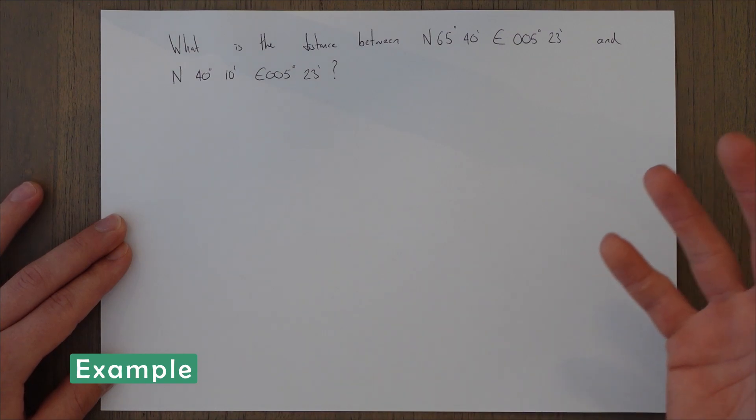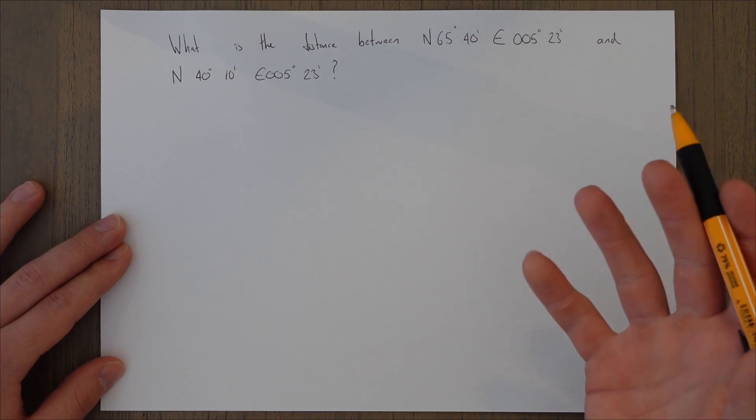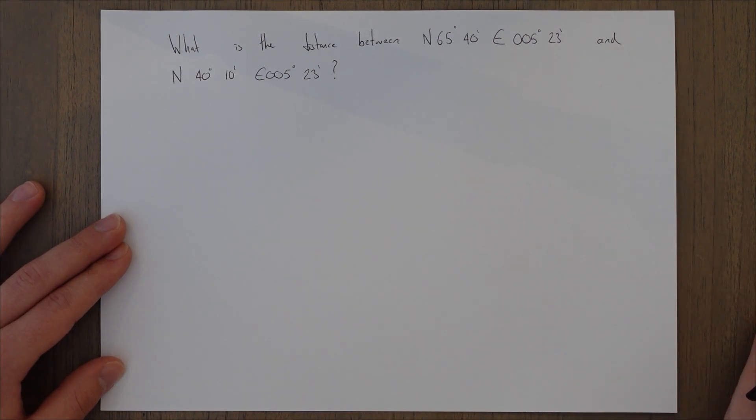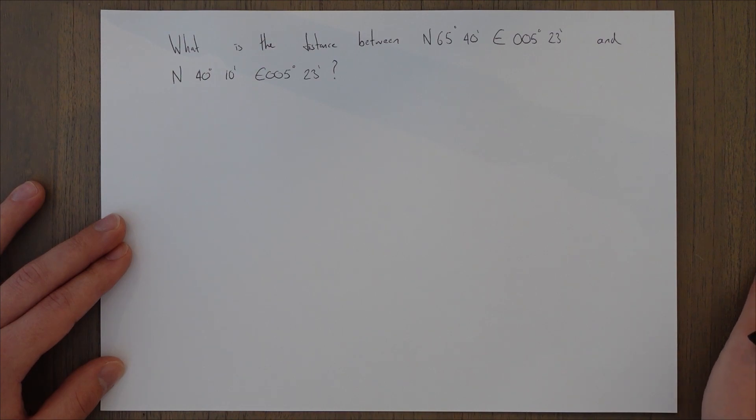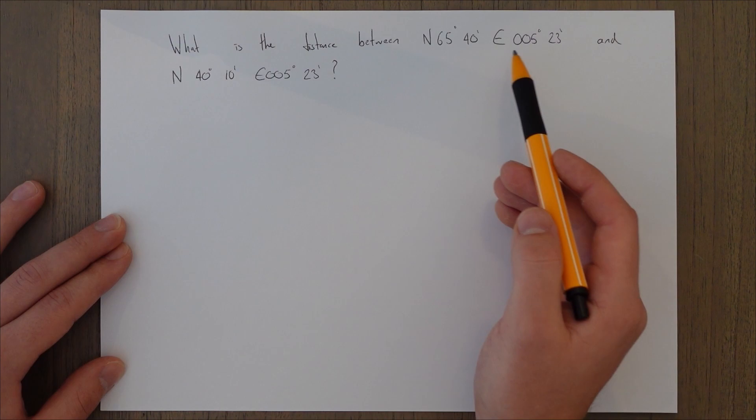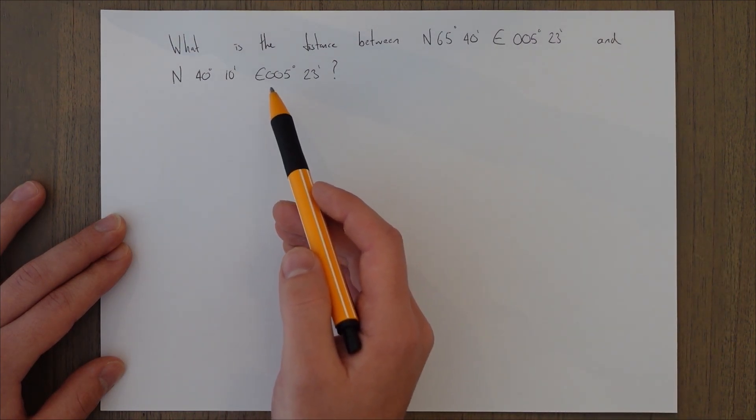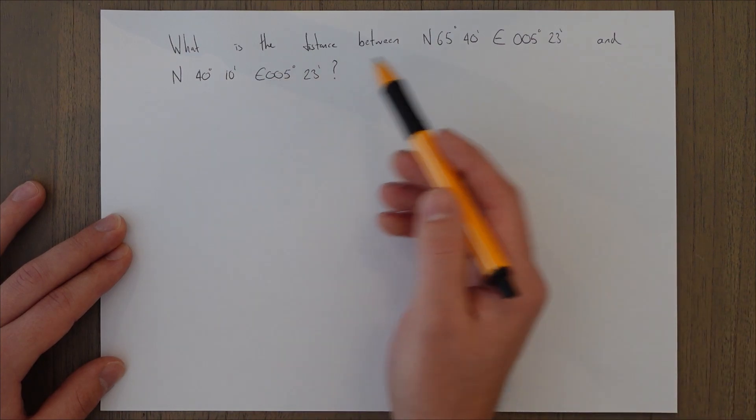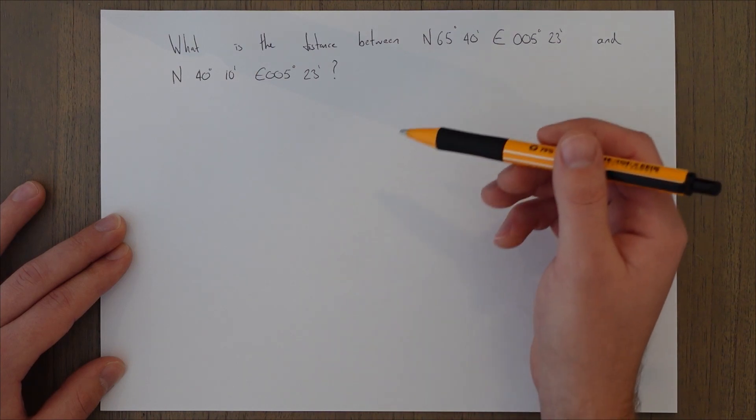So now we know that that distance is derived from the change in latitude, we can do some simple calculations to find out the distance between two points. As long as they're on the same longitude line for now. So I've got this example here. What is the distance between north 6540 east 00523 and north 4010 east 00523? So we can see we're on the same longitude line. So we're only looking at this difference between the two.